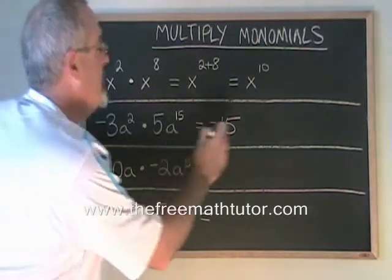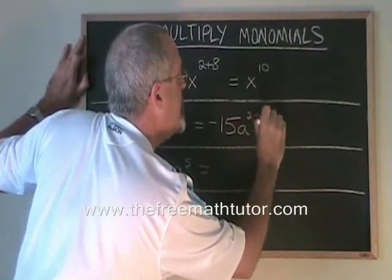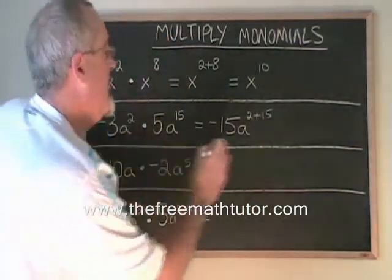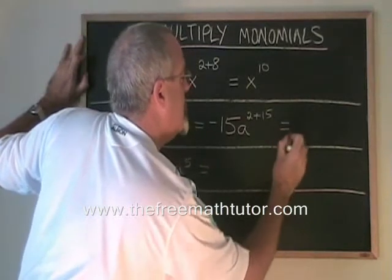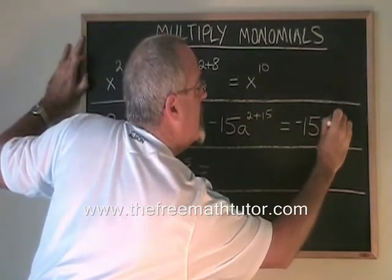a squared times a to the 15 is a to the 2 plus 15. So our final answer is negative 15a to the 17.